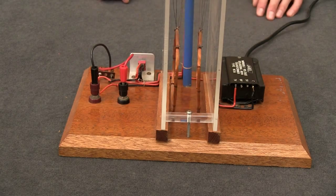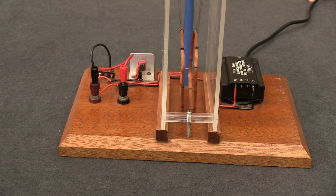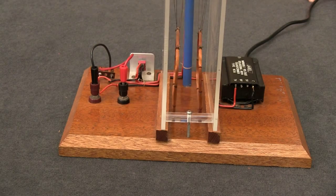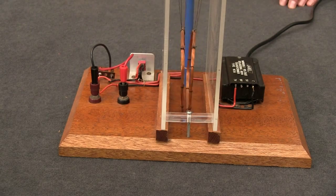So even though we're using alternating current, even though the direction of the current is changing 50 times a second it still seems to follow the same rule. Now try to rationalize that in your own mind.